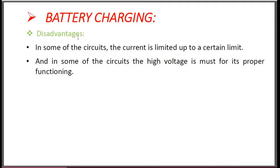Disadvantages of battery charging: In some circuits, the current is limited up to a certain limit, and in some circuits, high voltage is required for proper functioning. The main disadvantages are current limitation and voltage limitation, because solar energy is limited by irradiation and we can generate only smaller current and smaller voltage. For higher voltage and higher current, we have to use a number of solar panels, and due to this, cost will increase.